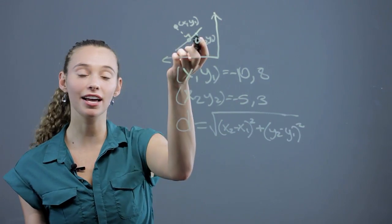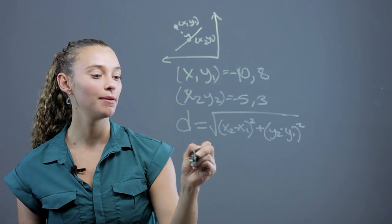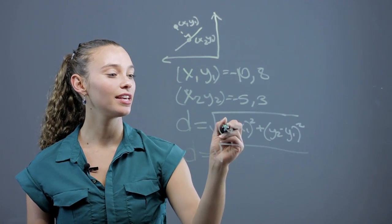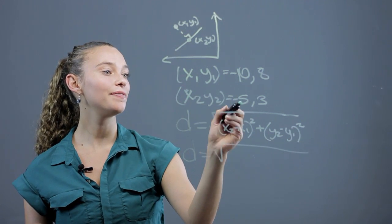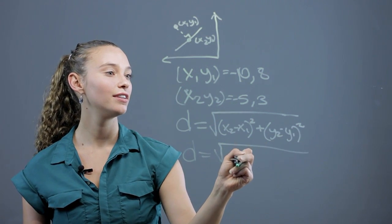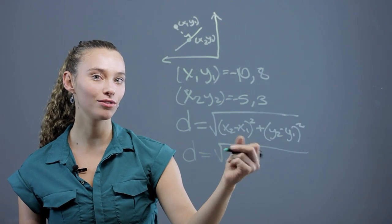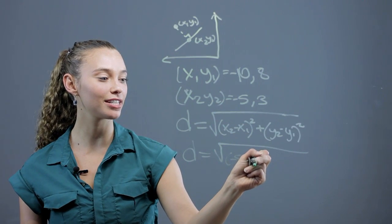Now we just plug in the points from this graph. So we get x2, that's negative 5, minus negative 10. Two negatives make a positive, so we can just say plus 10.